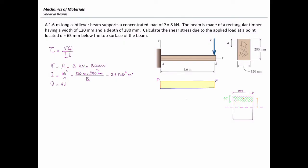So the distance of this centroid to the top is 65 over 2. So the distance of this centroid to the centroid of the entire section would be 140 minus 65 over 2. That is what I call it D. And I said 140 because that is the half of the height of the section.